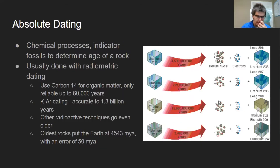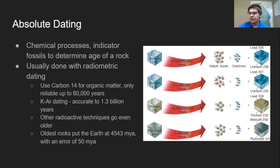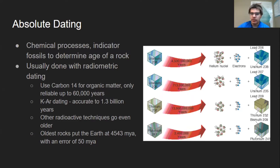Now let's talk about absolute dating. As the name suggests, it tells you a specific time — not necessarily an extremely precise time, it could be a range, but it's much more specific than relative dating. Whereas relative dating requires you to compare things and ask 'is it older or younger?', absolute dating says 'it's about this old.' We can find fairly finite times with specific accuracies.